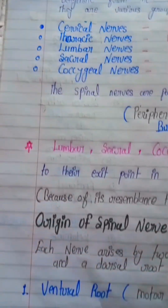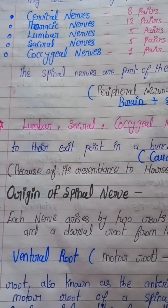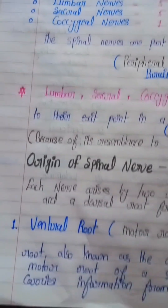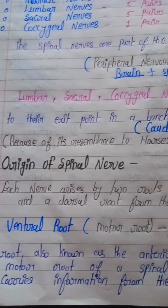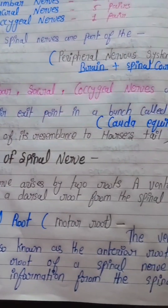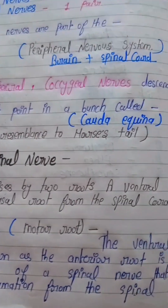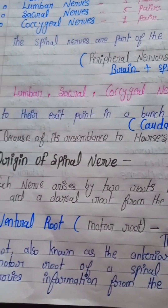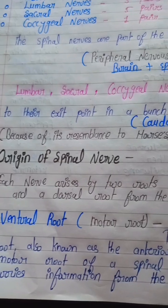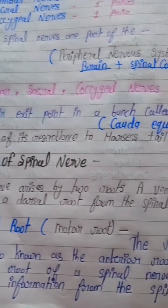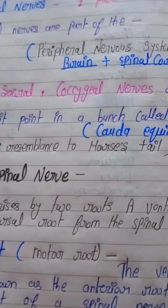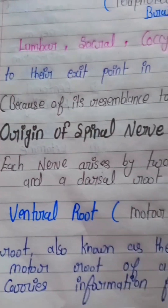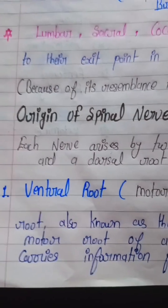Now, regarding the origin of the spinal nerve: each nerve arises by two roots — the ventral root and the dorsal root. The dorsal root is the sensory root.